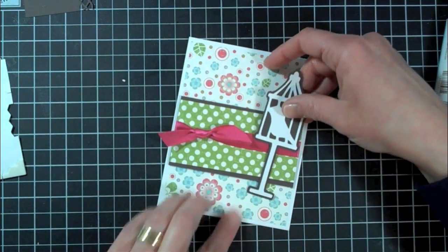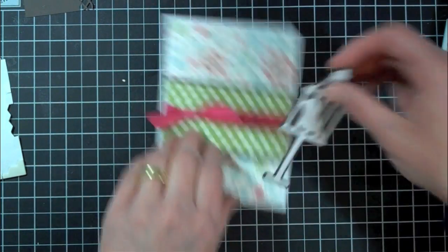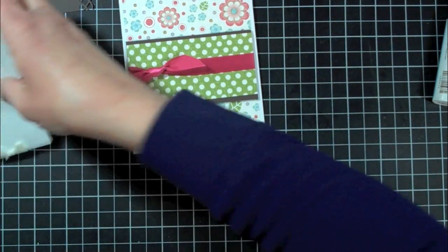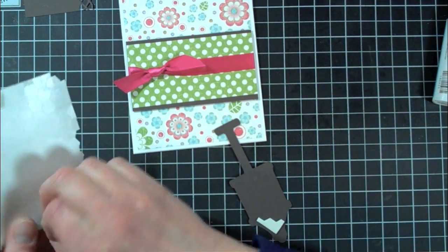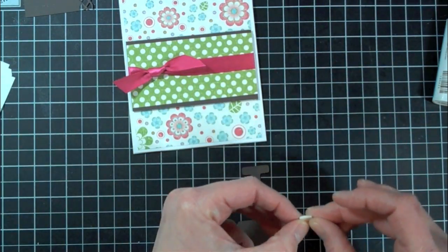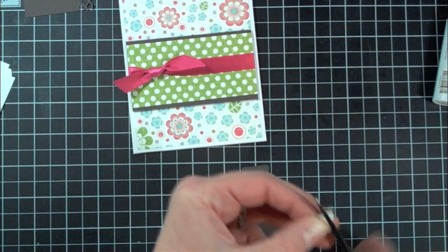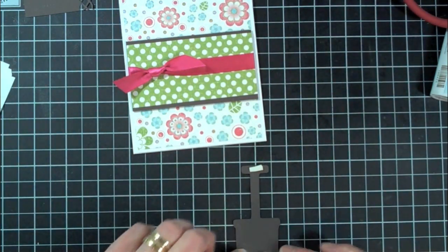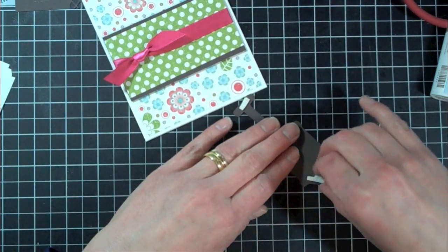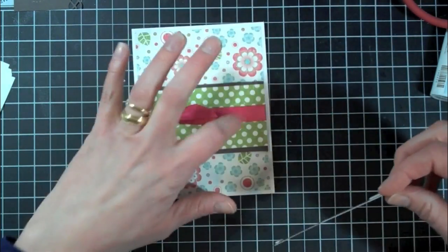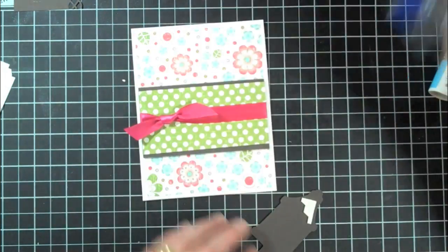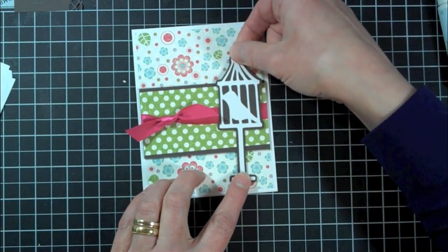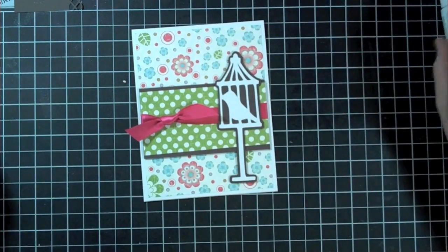And then I'm going to use more pop dots and add that right here. So I'm going to actually add them to the top and see, I don't know if this will fit. Oh, need to trim it down just a little bit. And the bottom, because the center of the bird cage will be on the center of this. So what I'm going to do is add some mono adhesive on there. Just add that right there. So there we go.